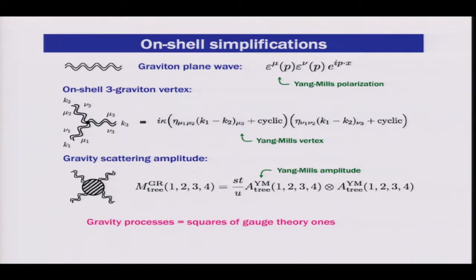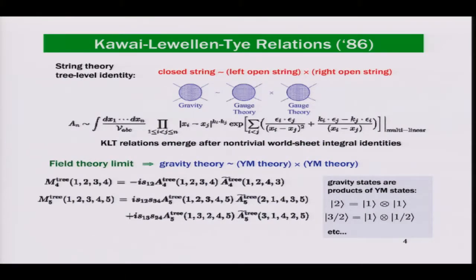This has been known for almost 30 years, by the work of Kawai, Lewellen, and Tye — the KLT relations — which came from string theory. They were motivated by the relation where you can think of a closed string as being two copies of open strings: a left-moving open string and a right-moving open string. What KLT showed is that you can deform the contour in the integral over the worldsheet to completely decouple the left-moving and right-moving modes, then take the field theory limit to get the relationship between a gravitational theory and two Yang-Mills theories.